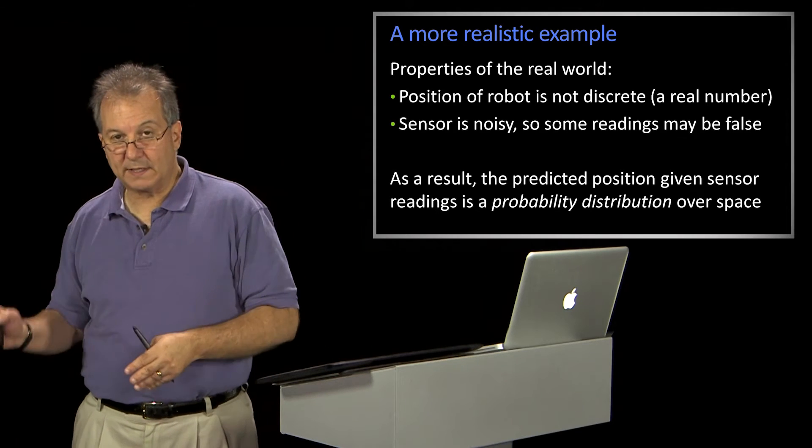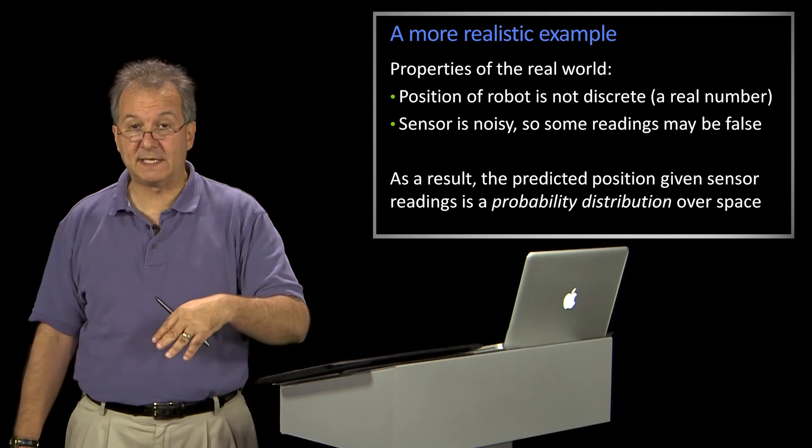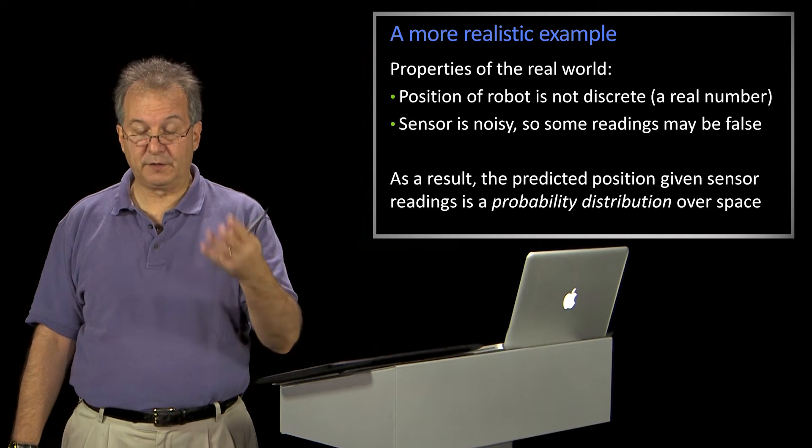So this example, this robot that's going down the hall, it's got this noisy sensor. This is perfect for a probabilistic Bayesian filter-based tracker.